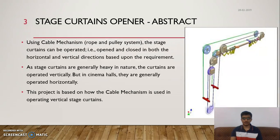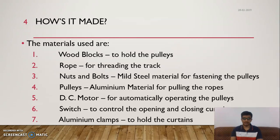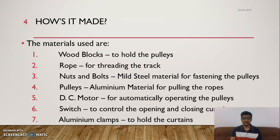The various components we have shortlisted and researched upon are: wooden blocks to hold the pulleys, rope for threading the track, nuts and bolts, pulleys since the entire working principle works on ropes and pulleys, a DC motor to automate the mechanism, a switch to control the opening and closing of the curtains, and aluminium clamps to hold the curtains. These basic components will make the project work not just for stage curtains but for every other curtain in offices, schools, or other places.